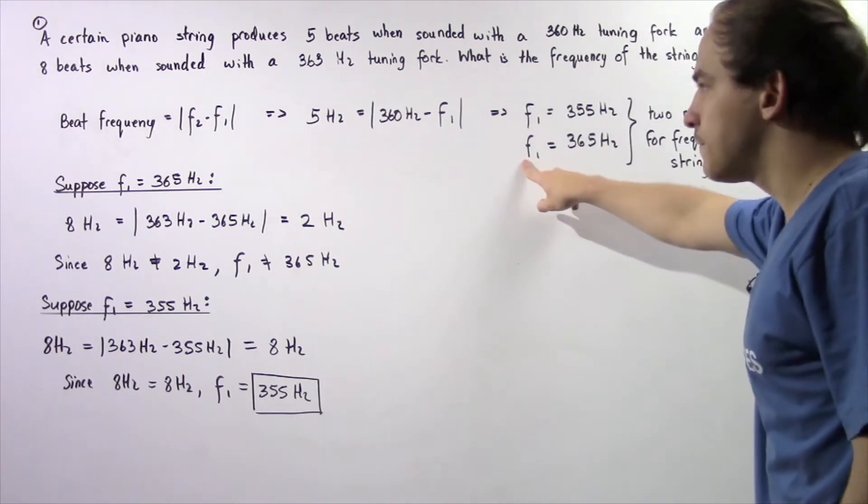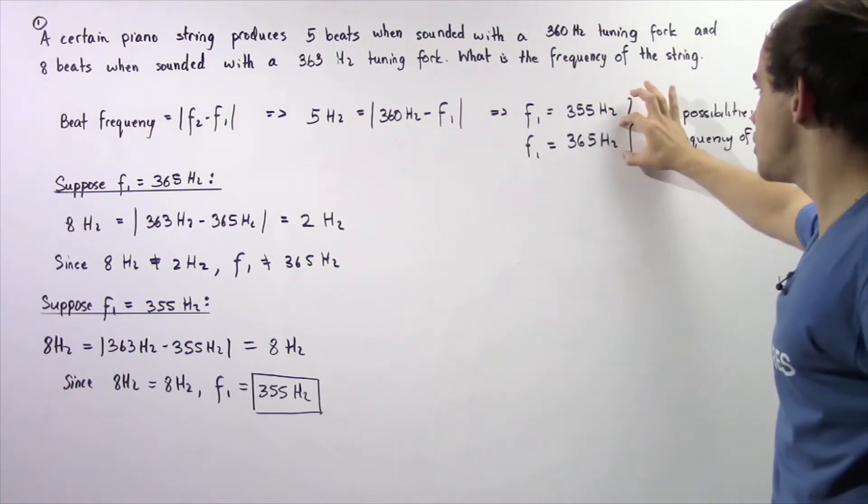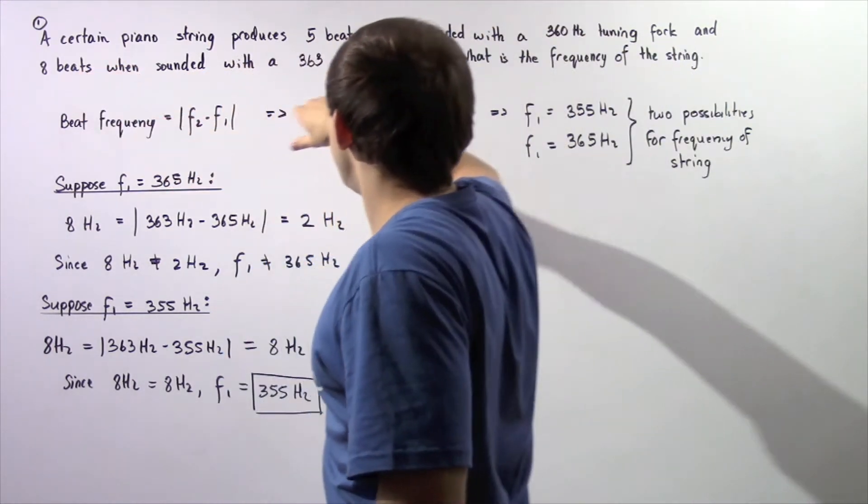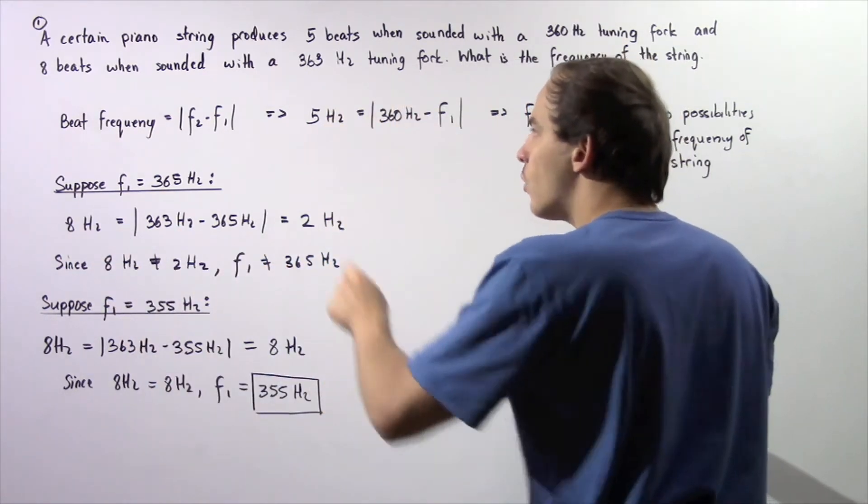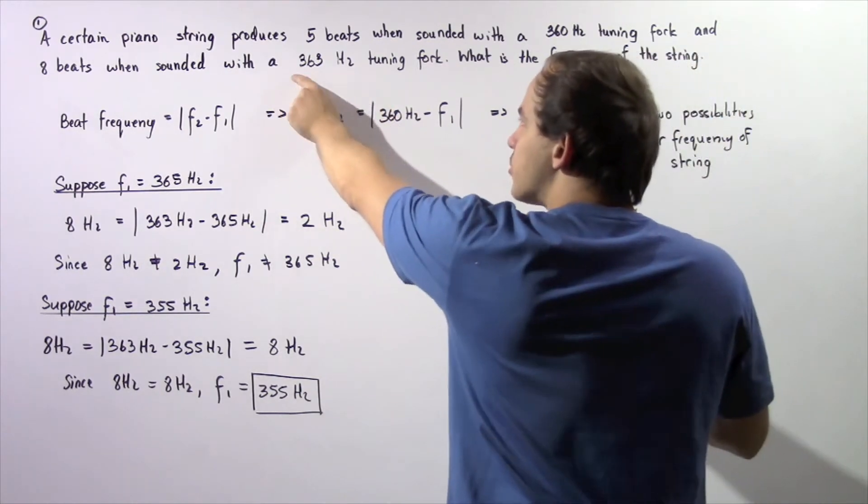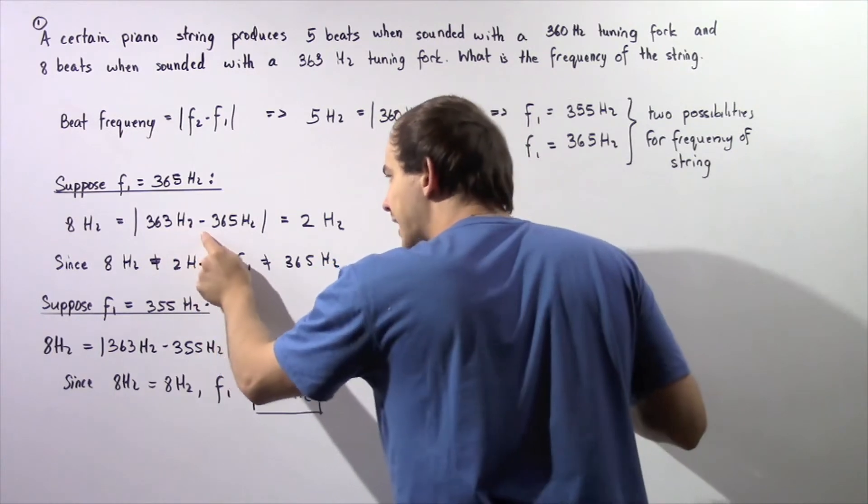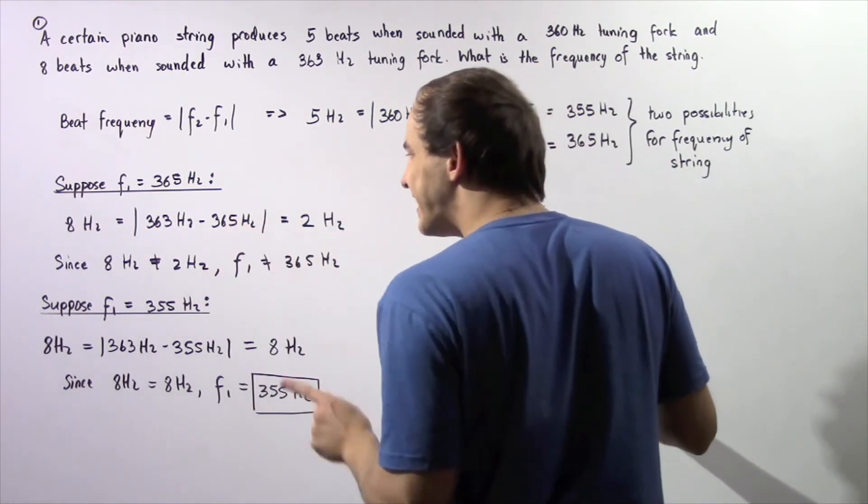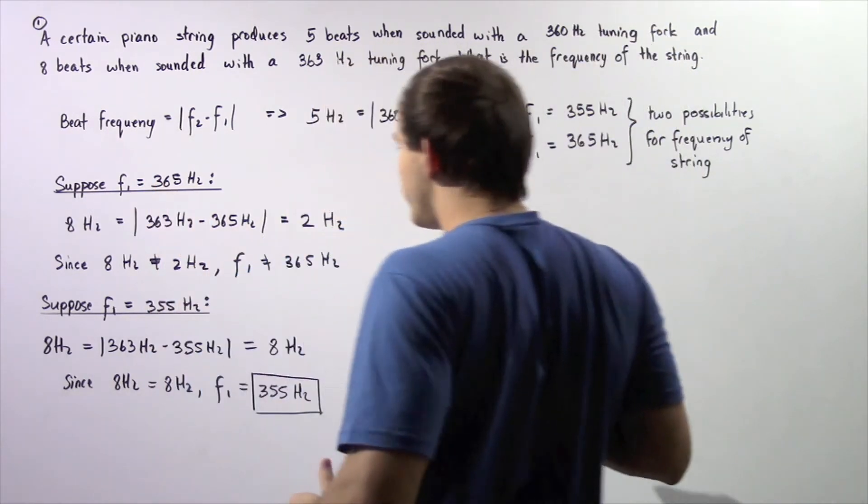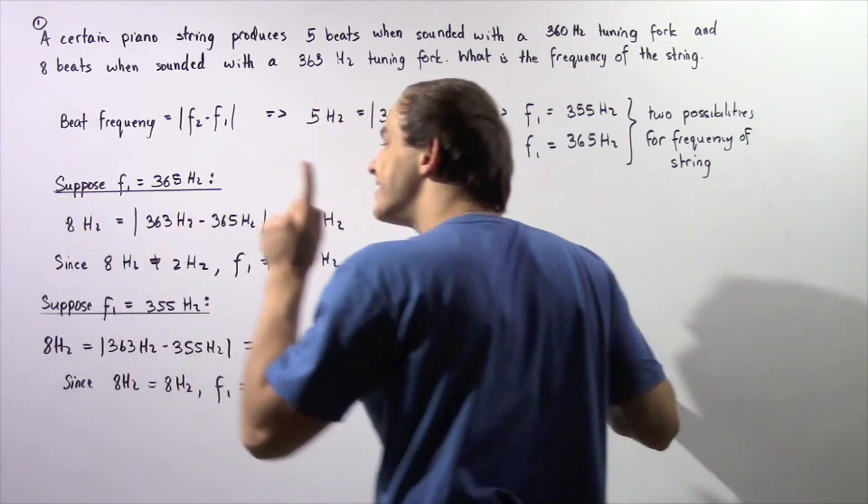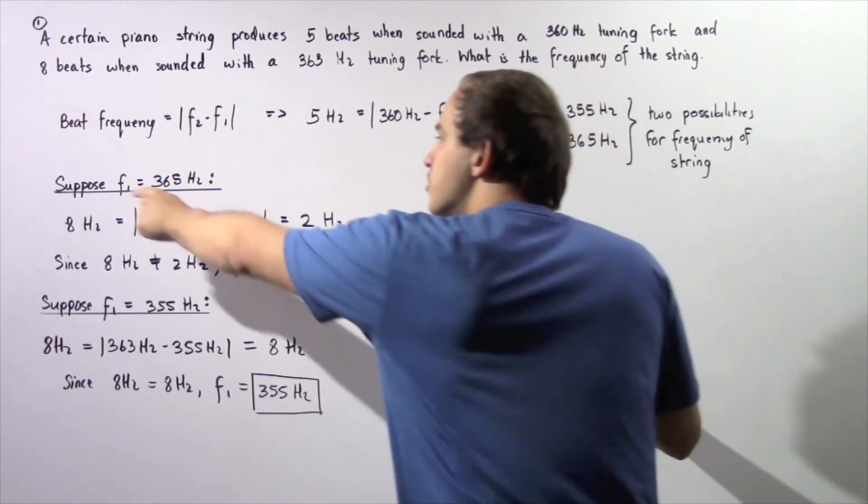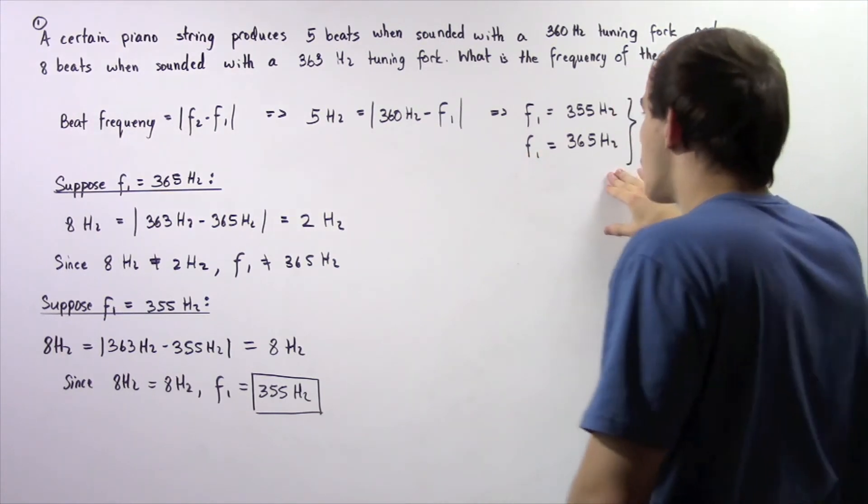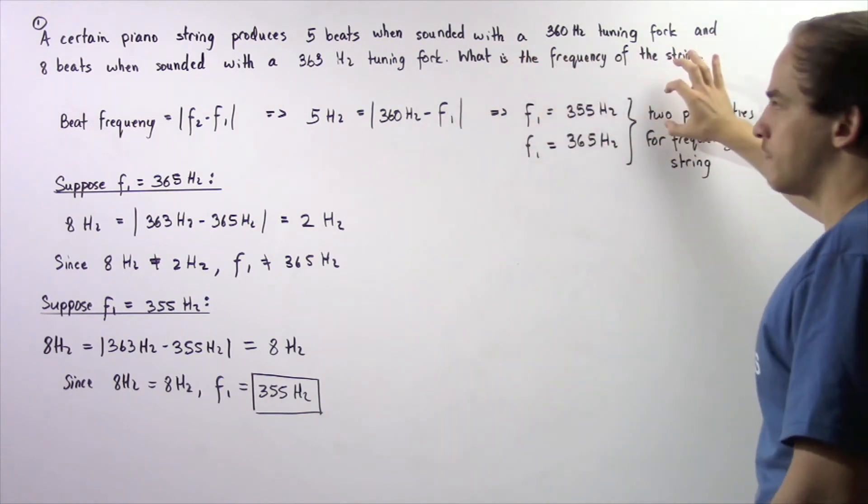So, let's suppose that the frequency is 365 hertz. So, we want to check if this frequency will satisfy the second condition. So, 8 beats is the beat frequency for the second tuning fork. So, 8 hertz is equal to, well, now F2 is no longer 360. F2 is 363 hertz. So, 363 hertz minus, well, we assume F1 is 365 hertz. 363 minus 365 gives us negative 2. And the absolute value of negative 2 is 2. So, notice that 8 hertz does not equal to 2 hertz. And that means this initial assumption that F1 is 365 hertz is not satisfied. It is not true. And so, this is not the correct frequency. This must be the frequency of the piano string.